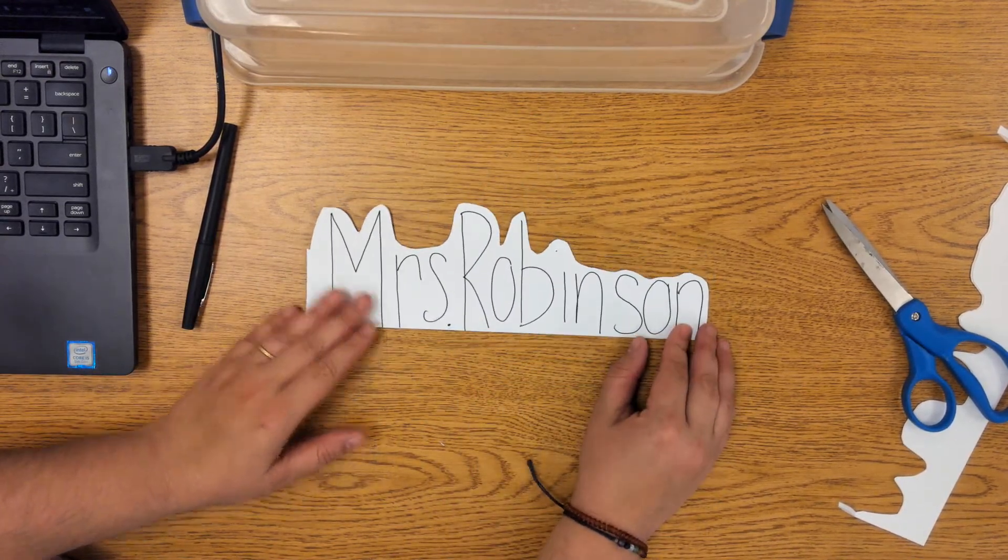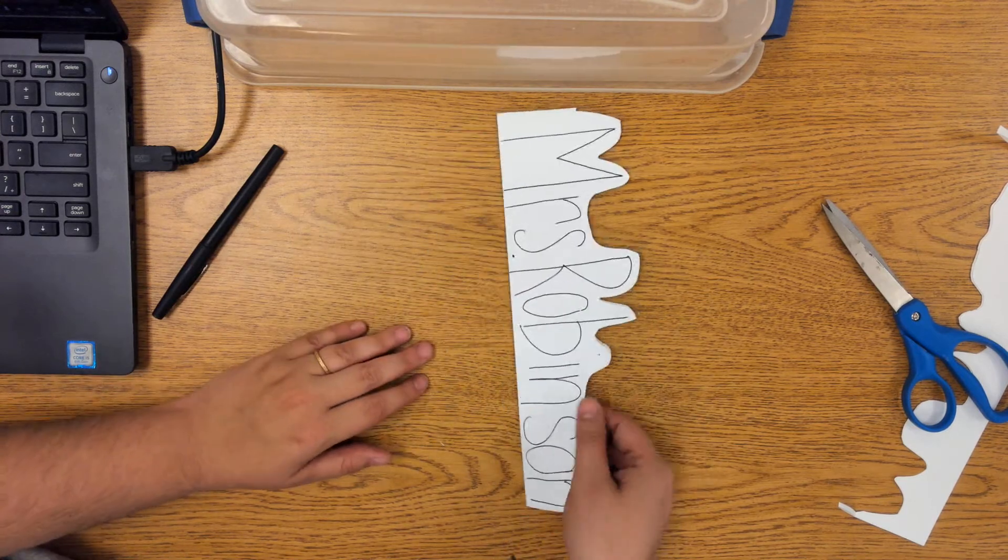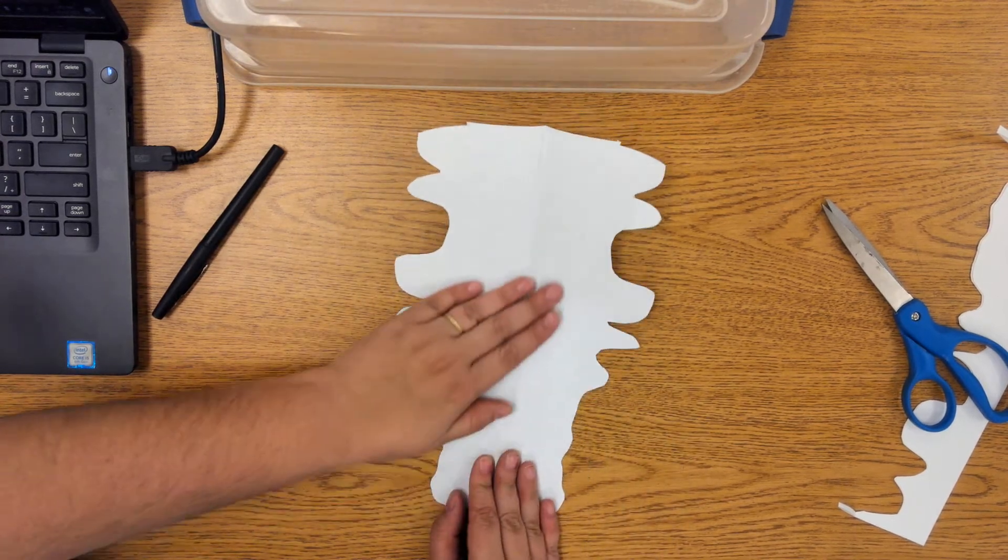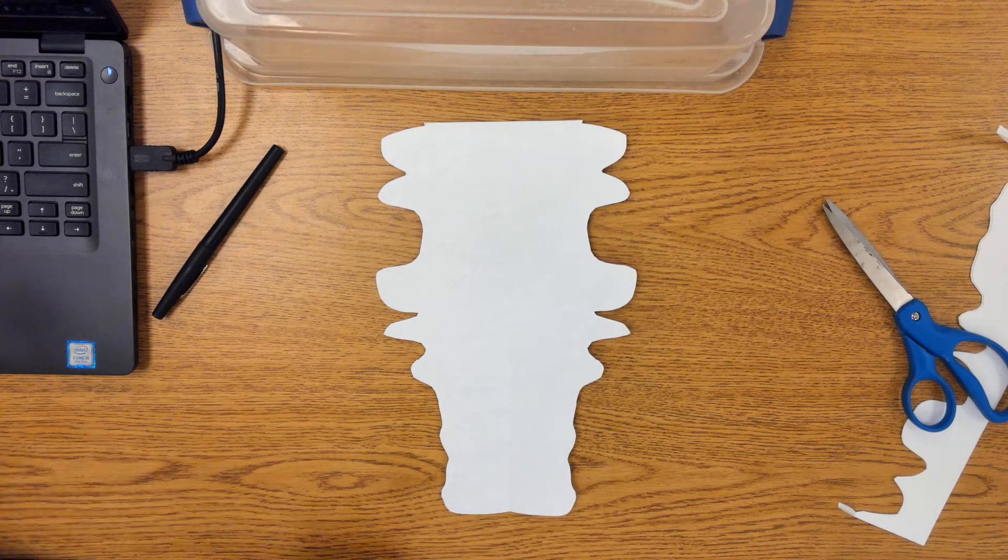When you're done with this, if I have my name like this, what should happen is when I turn to the side and open that paper back up, you should be able to open it up and you kind of end up with this really crazy shape.